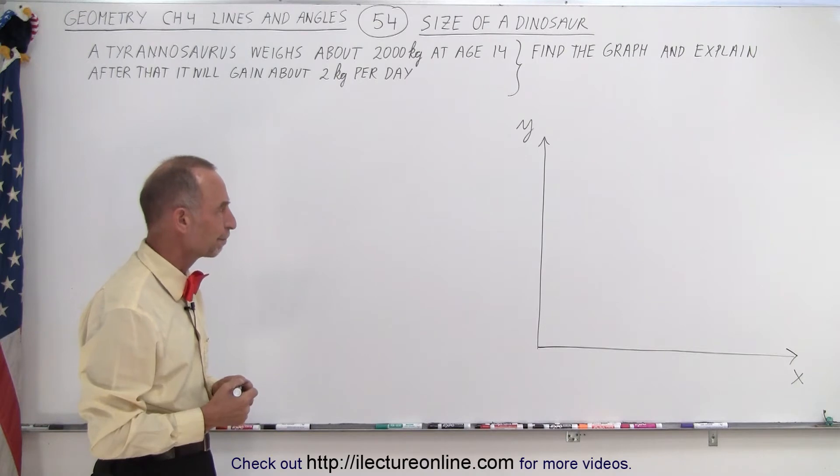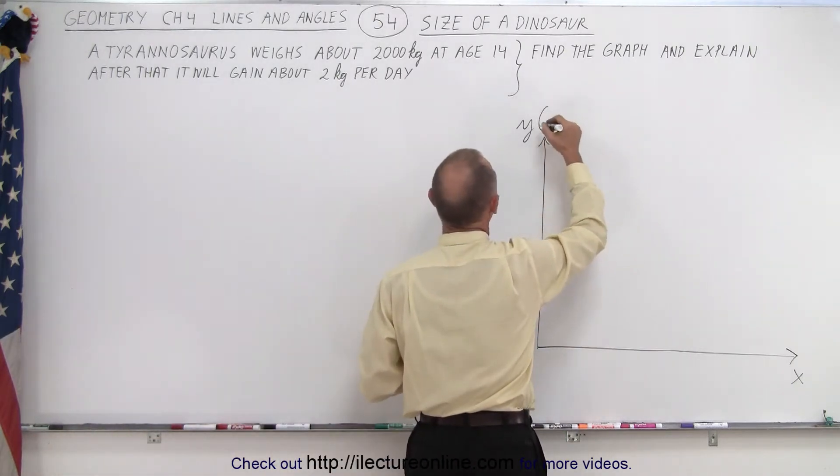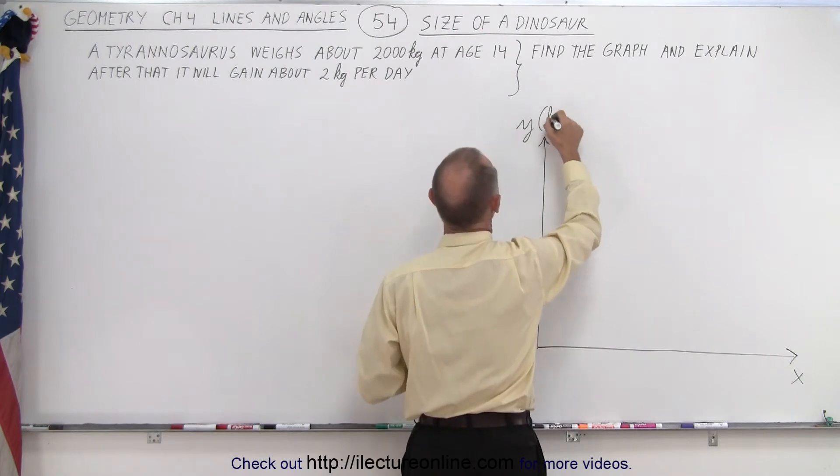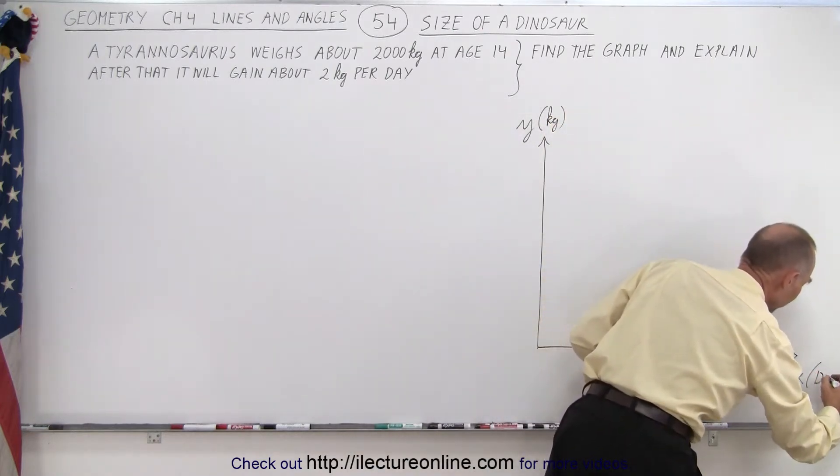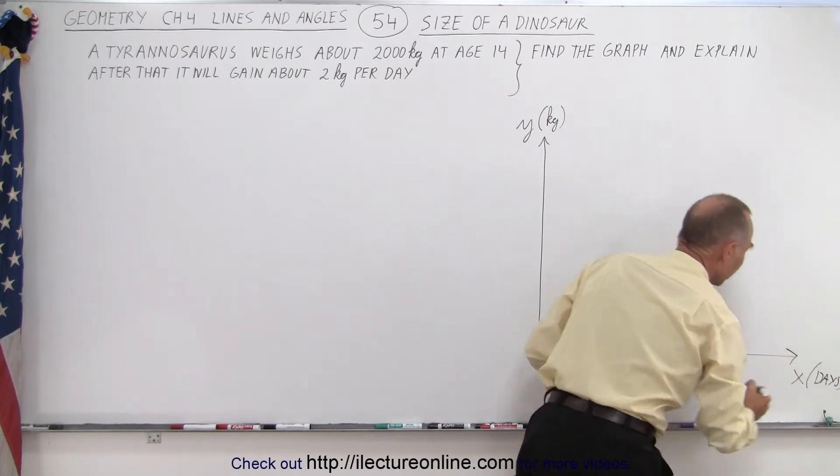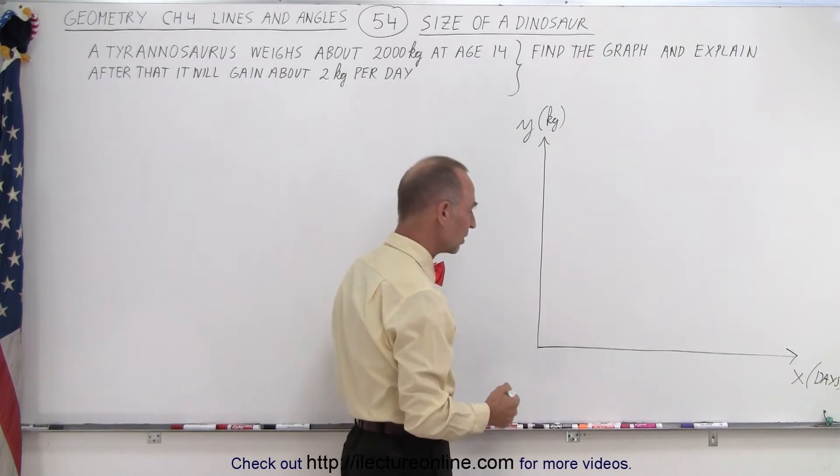So how do we graph that? Well, if the vertical axis represents weight, and so that would be kilograms, and the horizontal axis represents time or days.